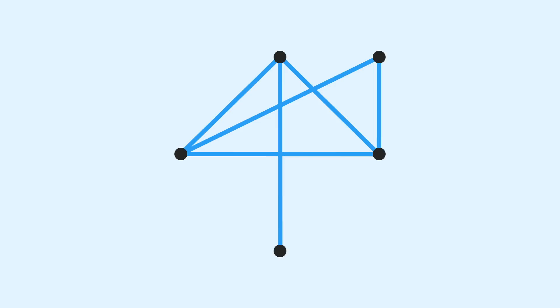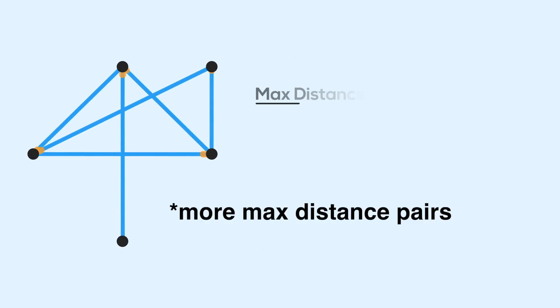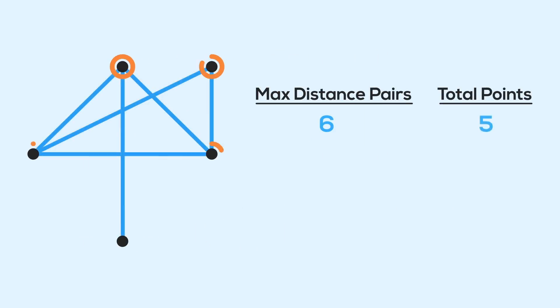That will always happen when you have more pairs than points. Like, we have six pairs here, five points in total. One point will be a part of three or more of those pairs.